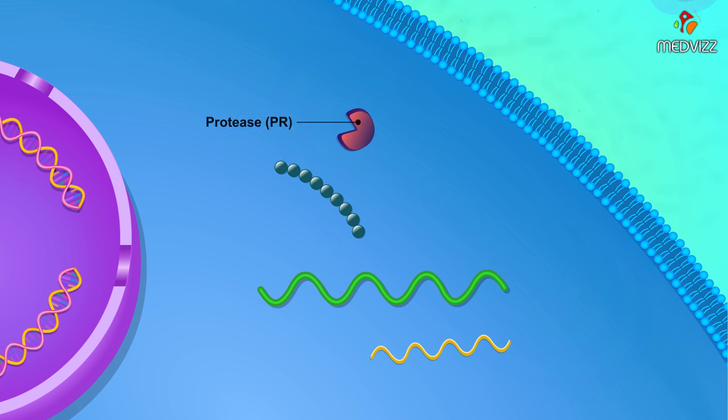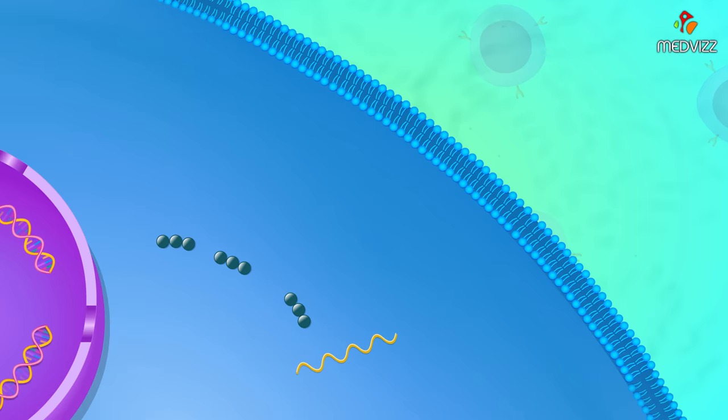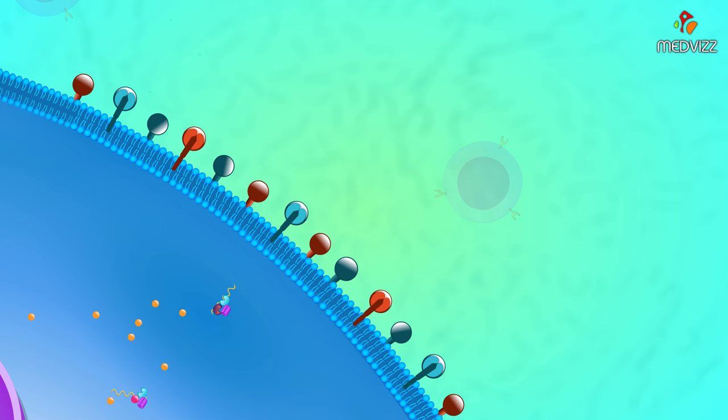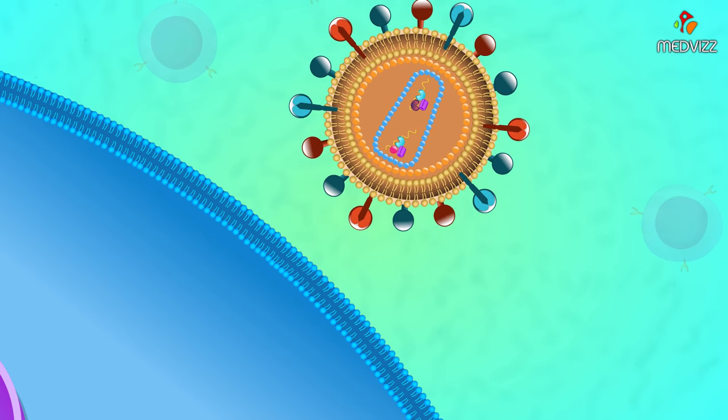Some of the functional proteins are formed by cleavage of a long polyprotein by the enzyme protease. Protease inhibitors interfere with this step. GP41 and GP120 are inserted into the host cell membrane, and the structural proteins surround the viral RNA to form the core. Finally, the virion is released by budding.